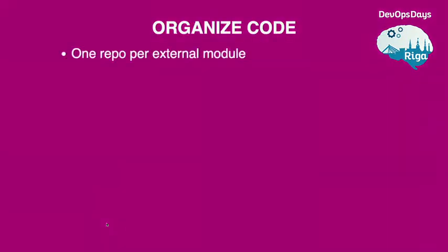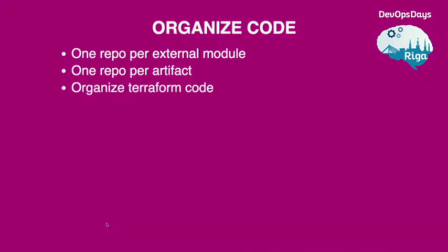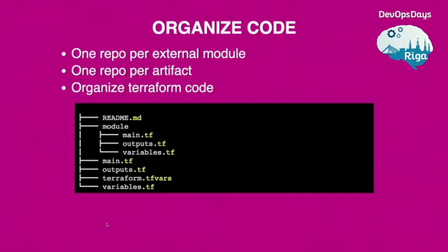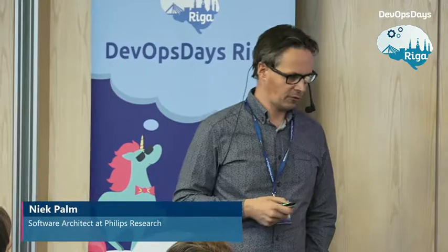Organizing code is an important topic when working with multiple teams. We use one repository per external Terraform module, and every artifact we deploy has its own repository — easy to manage, change, version, and test. We organize Terraform code following de facto standards: a main file for all resources, a variables file for all variables, an output file for output variables, and the same structure for modules. Terraform code is not easy to test directly, but Terraform has built-in validation support and there are linters available that check for best practices.